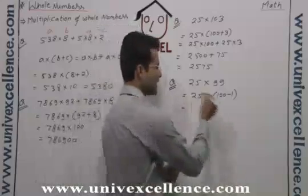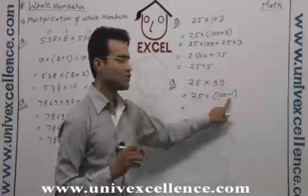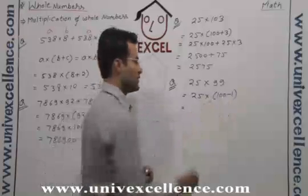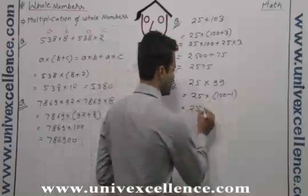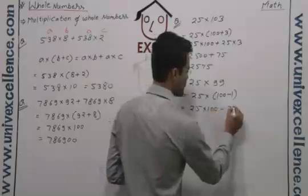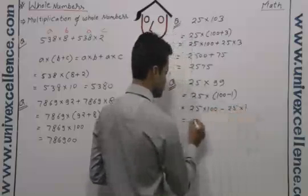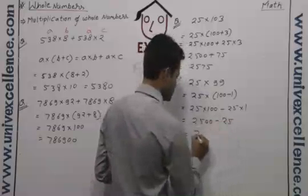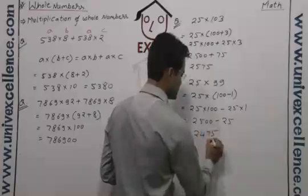Now use the distributive property as we know. The plus or minus, whatever it is, distributive property will be followed. So 25 into 100 minus 25 into 1. That is 2500 minus 25. That means 2475, answer.